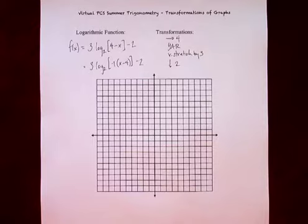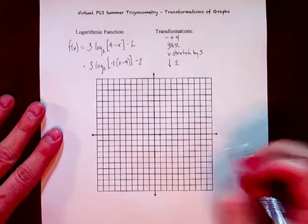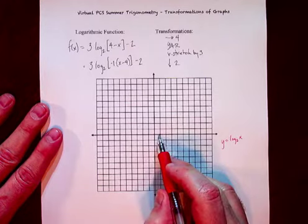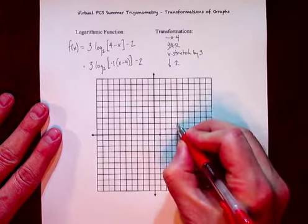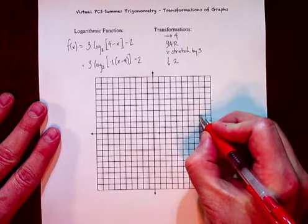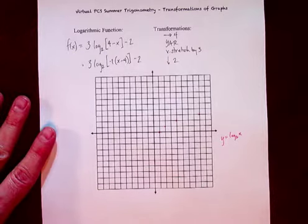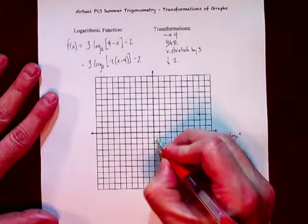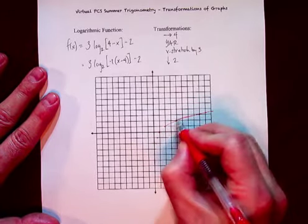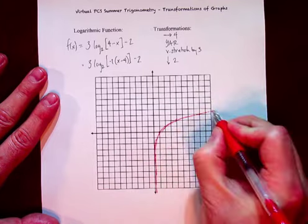Let's go ahead and draw the parent. Remember log base two: y equals log base two of x. When you plug in a one, you're going to get zero. When you plug in a two, you're going to get one. When you plug in four, you get two. Eight is two raised to the third power, so that gives three. And this is one half, one fourth, one eighth — and that's kind of how it progresses. We have a logarithmic function which looks like that.